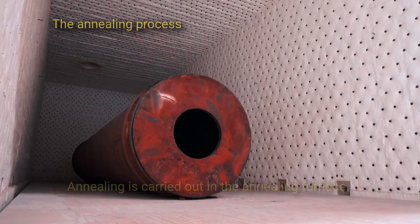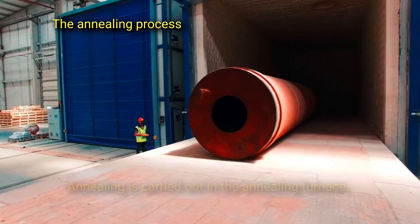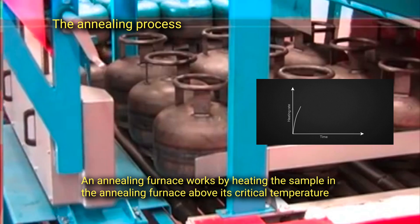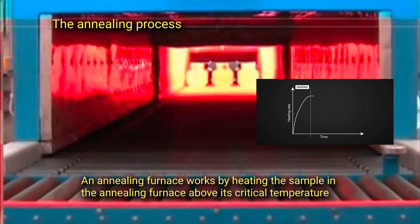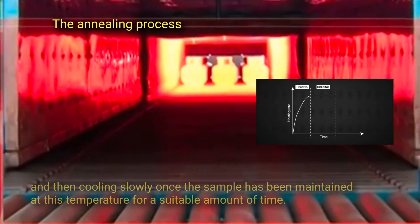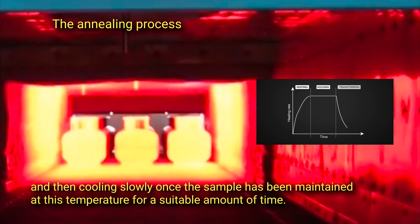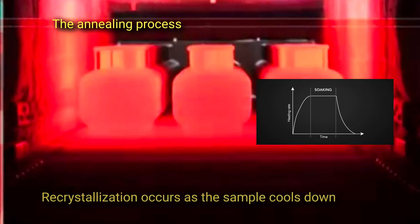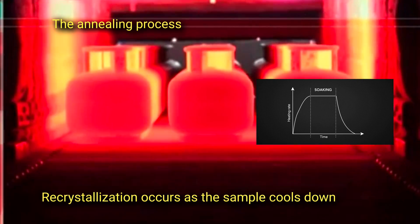The annealing process is carried out in the annealing furnace. An annealing furnace works by heating the sample above its critical temperature, and then cooling slowly once the sample has been maintained at this temperature for a suitable amount of time. Recrystallization occurs as the sample cools down.